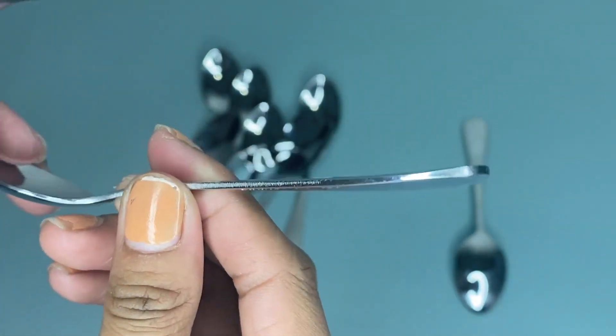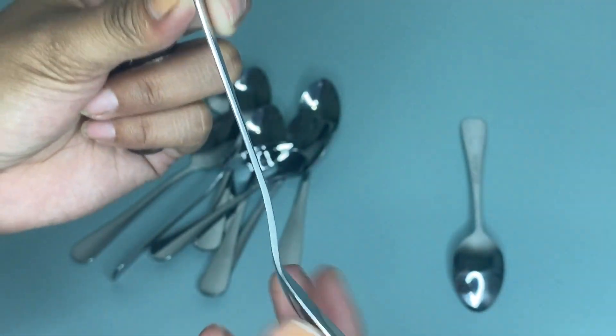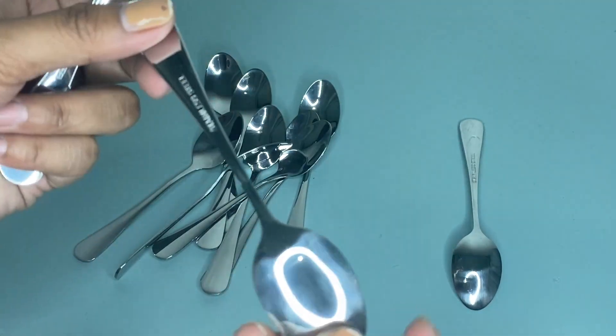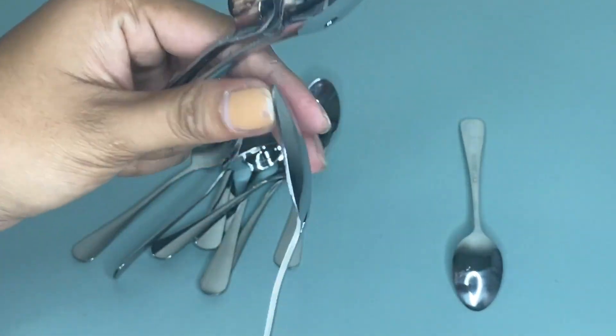These are durable. The coffee spoons are very small and cute, making them perfect and elegant to use for tea, coffee, cappuccinos, espressos, dessert, and appetizers. They're also great for sugar and cream.